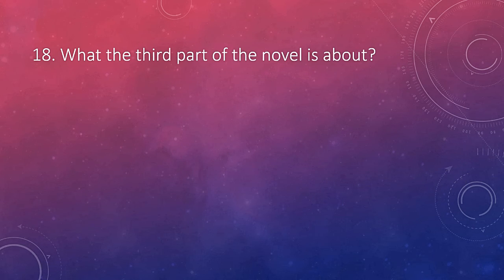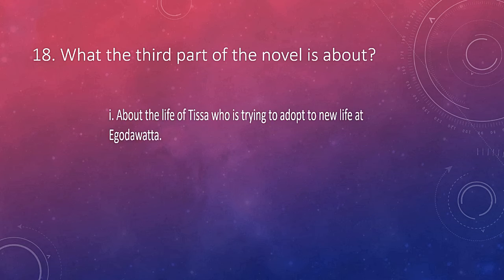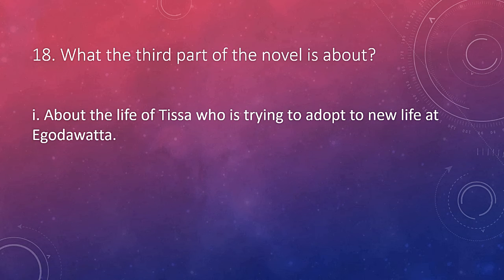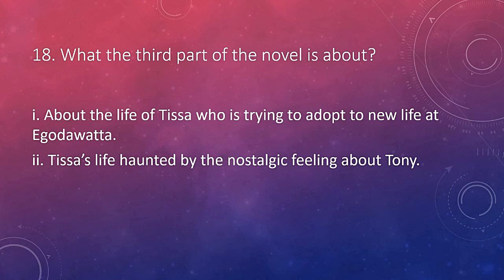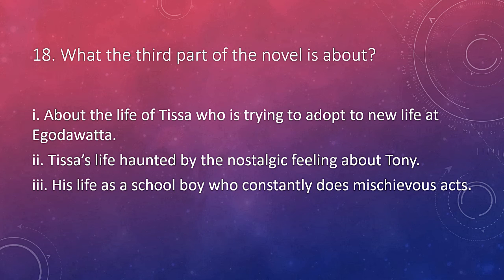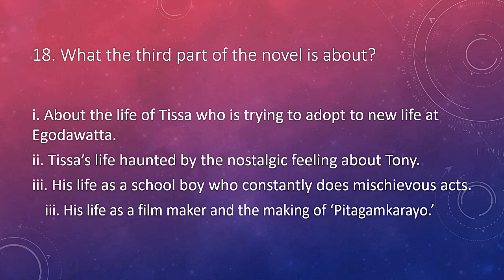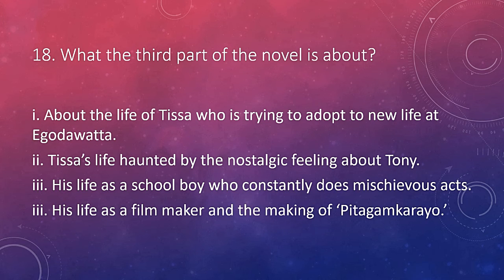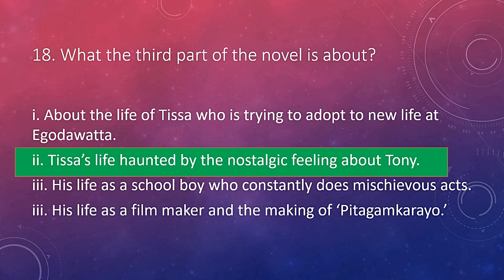What is the third part of the novel about? Is it about the life of Tisha trying to adapt to a new life at Ekodavatta, Tisha's life haunted by nostalgic feeling about Tony, his life as a schoolboy who constantly does mischievous acts, or his life as a filmmaker and the making of Peter Gamkarya? The answer is Tisha's life haunted by nostalgic feeling about Tony. The third part is about Tisha as a growing personality — his awareness of the changing environment around him is developing, but he finds his heart cannot forget his past with Tony. His whole life is haunted by the feeling of guilt and his lost relationship with Tony.